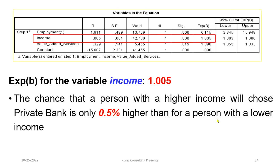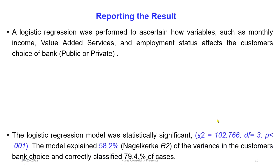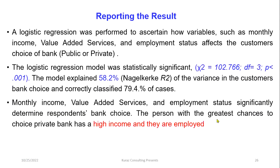For the continuous variable income, the odds ratio is 1.005, meaning the chance that a person with higher income will choose a private bank is only 0.5% higher than for a person with lower income. In reporting these findings, a logistic regression was performed to ascertain how variables such as monthly income, value-added service, and employment status affect the customer's bank choice.